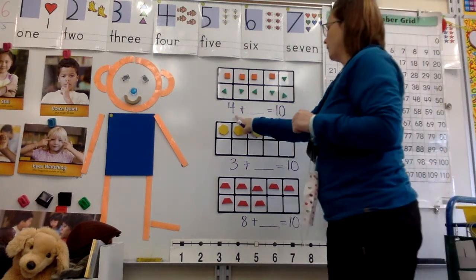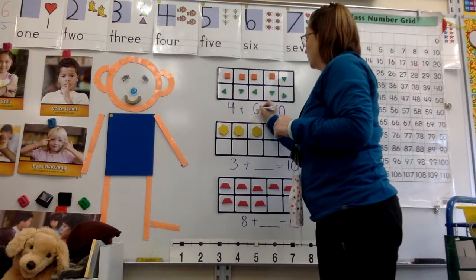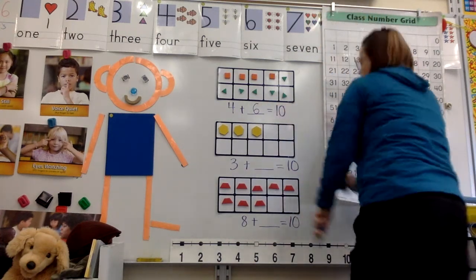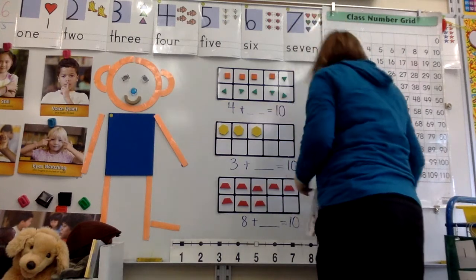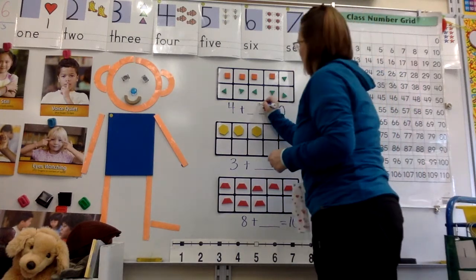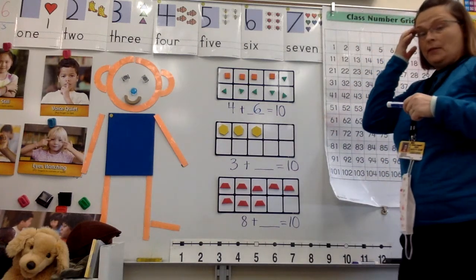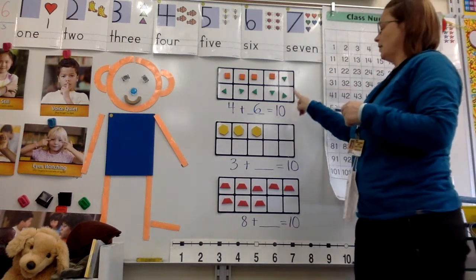And I can see my group of four is together and I can see my group of six is together. So four plus six is going to equal ten. I'm gonna use a different color here since we use different counters. Four plus six equals ten.